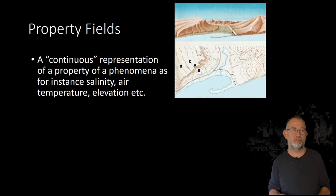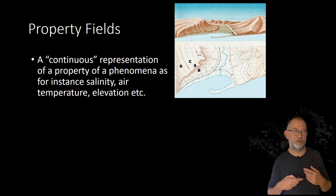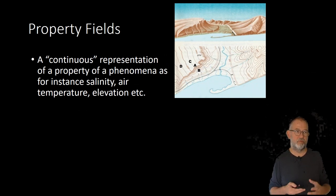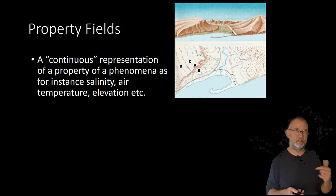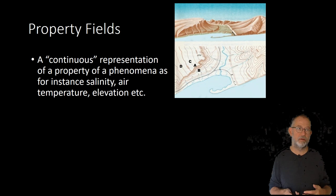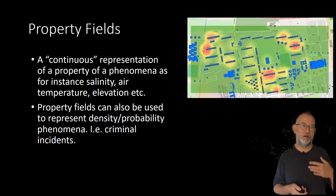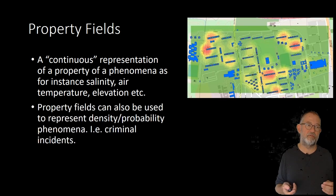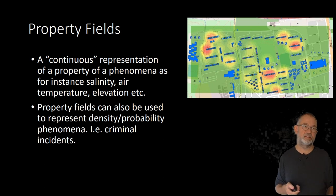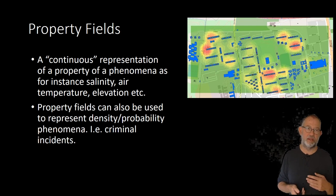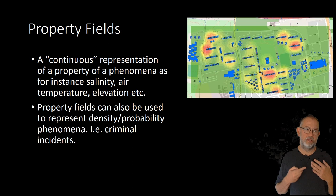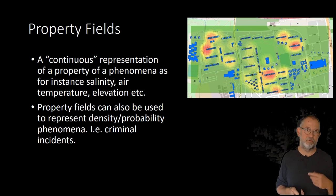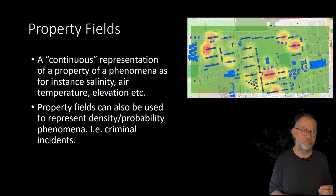Our property fields are continuous. They represent the individual properties — salinity, air temperature, elevation, and so on. But they can also represent derived properties, things such as density or probability. In this case, I have a visualization of the density of criminal offenses in an area in Denmark.